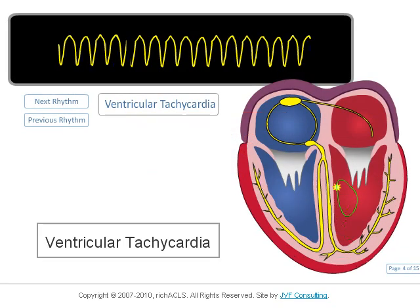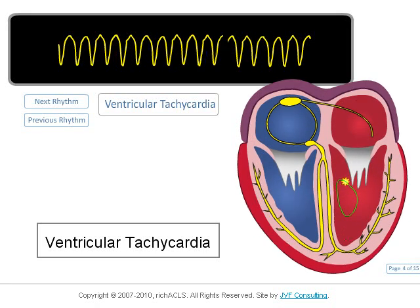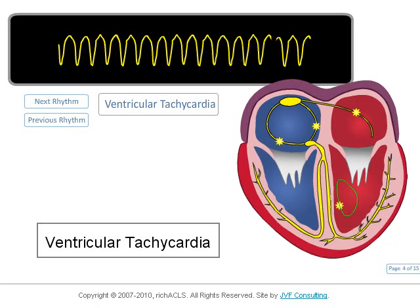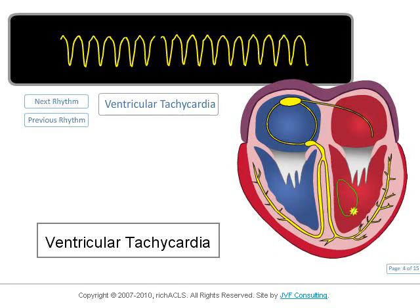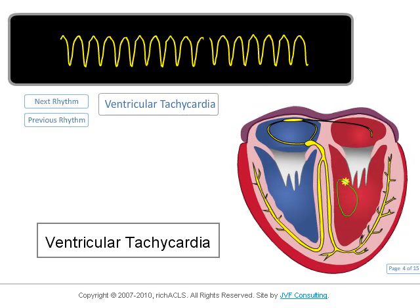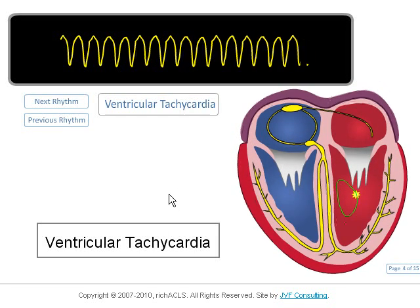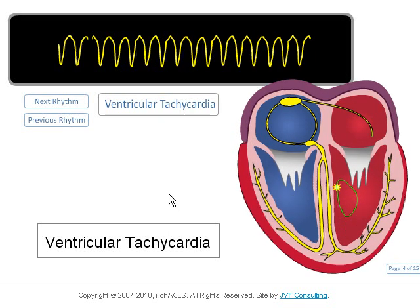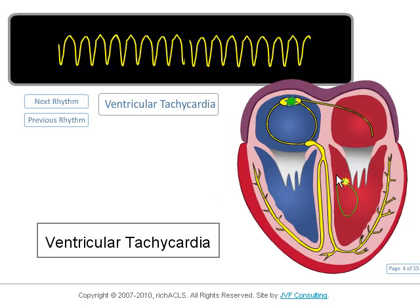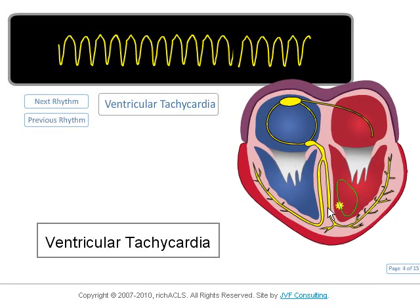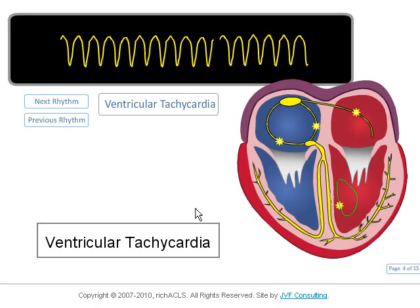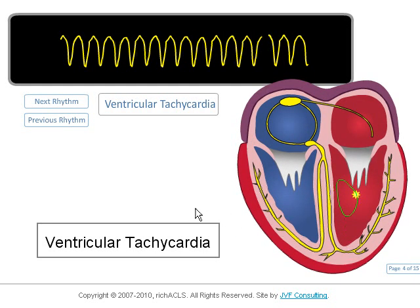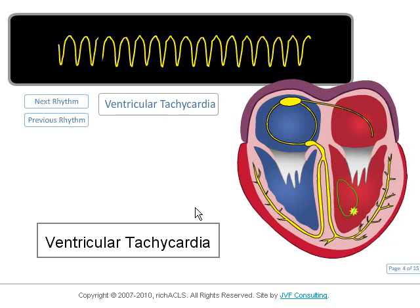Here we have ventricular tachycardia. Ventricular tachycardia, like supraventricular tachycardia which we discussed in a previous video, is often generated from a re-entry pathway. When the re-entry pathway is innervated, it initiates a pacing impulse which rapidly fires off the cardiac muscle.